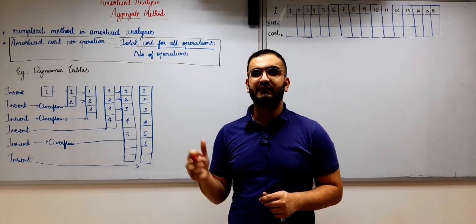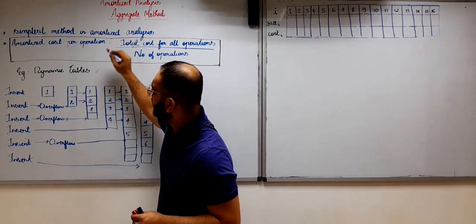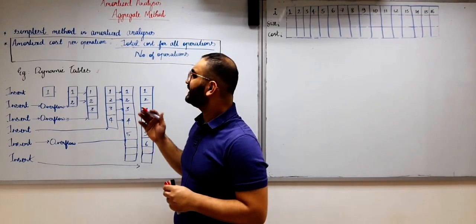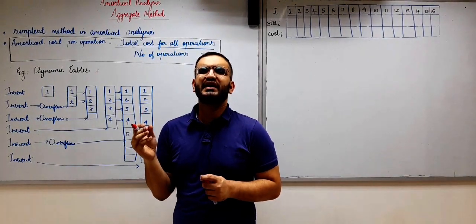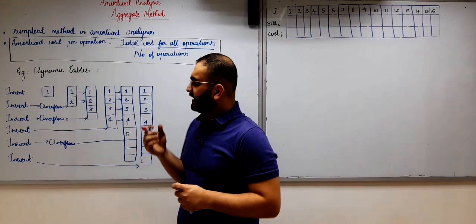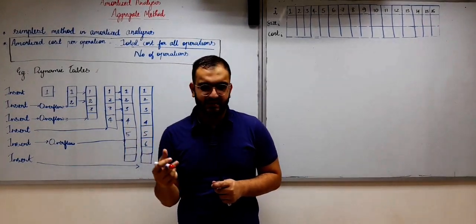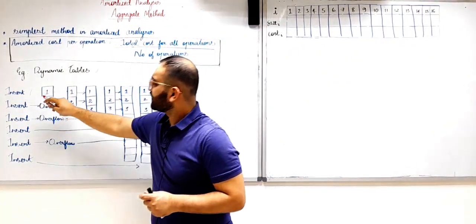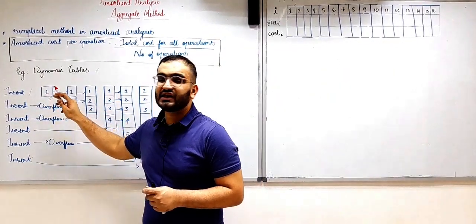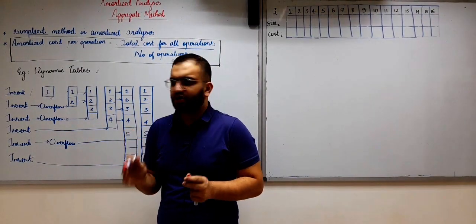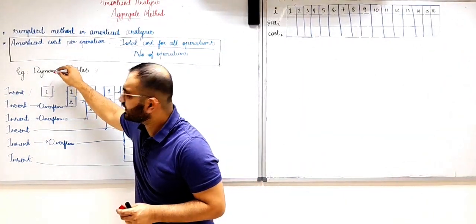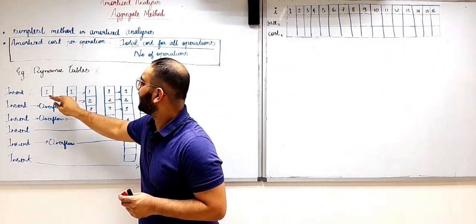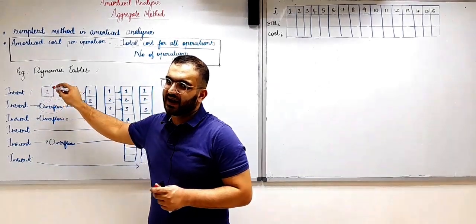For each and every method — aggregate method, accounting method, and potential method — I am going to explain them with the help of this example of dynamic tables. Basically, a dynamic table is a data structure, you can consider it as a dynamic array, in which if we keep on inserting elements, the first insert stores the first element. The initial size of the dynamic table was zero, so we inserted the first element and now the size is one.